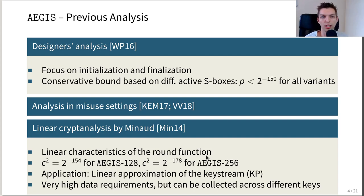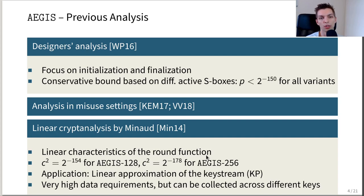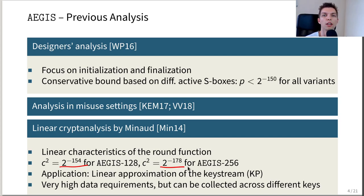Previously, Aegis was analyzed by the designers, who focused on the initialization and finalization part of the cipher, and using a conservative bound based on active S-boxes, they showed resistance against differential cryptanalysis. It was also analyzed in nonce-misuse settings, and the most notable analysis was performed by Brice Minot in 2014, who used linear characteristics of the AES round function to find a linear keystream bias. His keystream bias has a squared correlation contribution of 2^{-154} for Aegis-128 and 2^{-178} for Aegis-256. For Aegis-256, this leads to an attack more efficient than a generic key-guessing attack.